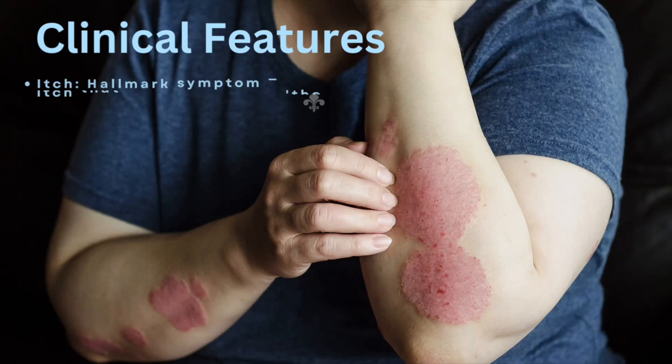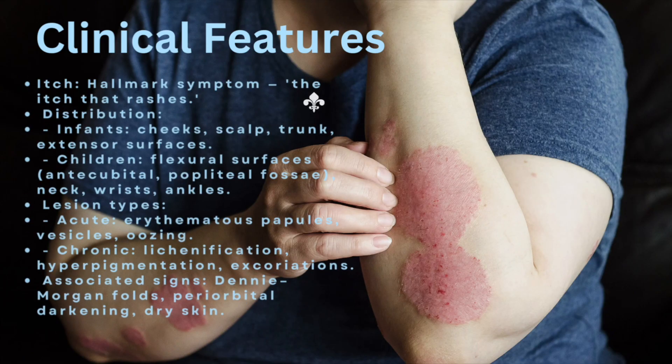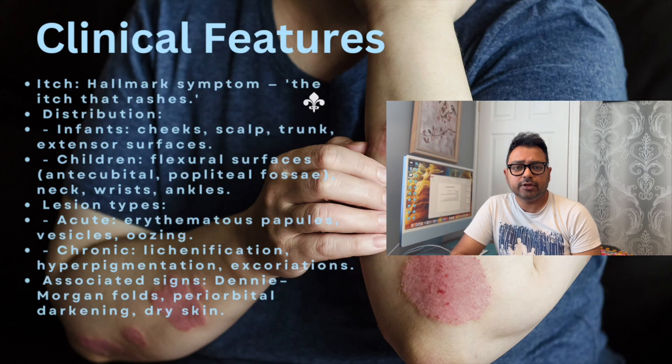What are the clinical features? The hallmark is the itch and rash. Distribution in infants may involve the scalp, cheeks, trunk, and extensor surfaces, whereas in older children flexural surfaces are more involved, like the antecubital fossa, popliteal fossa, ankle, and wrist. Acute presentation could be papules, plaques, or vesicles, while chronic presentation may show lichenification, hyperpigmentation, and dry skin.